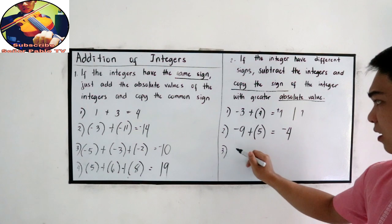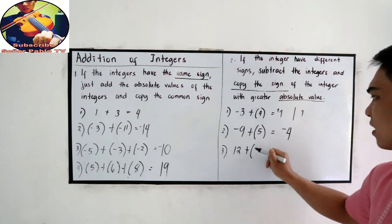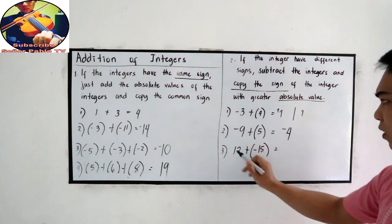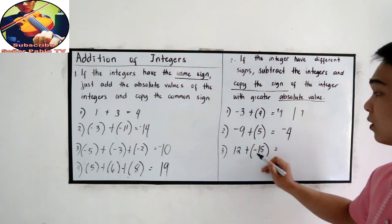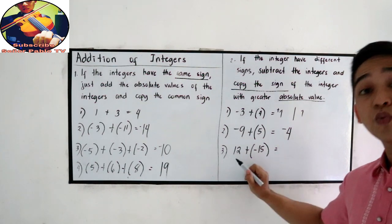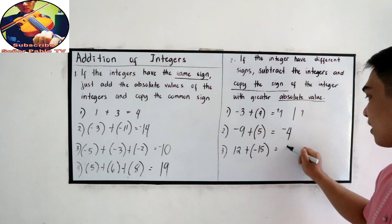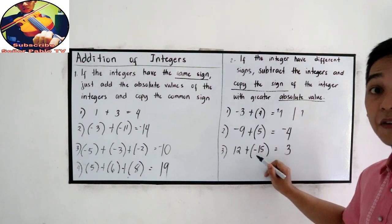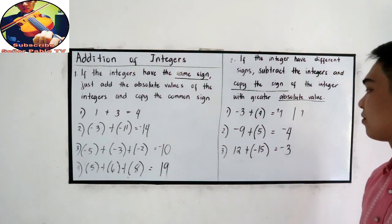How about number three: twelve plus negative fifteen? One is positive and one is negative. So subtract: fifteen minus twelve is three. What is the sign? Fifteen is greater, and fifteen is negative, so the answer is negative three.